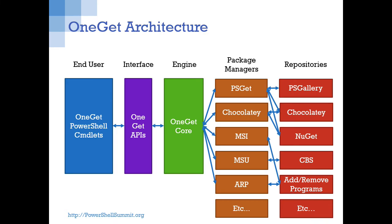At a high level, the architecture has a set of new PowerShell cmdlets that talk to the OneGet APIs, which is a public C# API. From there, the OneGet core engine does the demuxing to all the different package managers or providers installed — things like PowerShell Get, Chocolatey, MSI, MSU (Microsoft Updates), and ARP (Add and Remove Programs). Each package provider can talk to one or more online repositories.